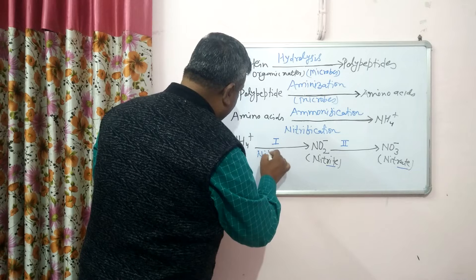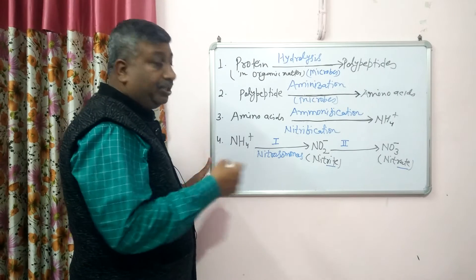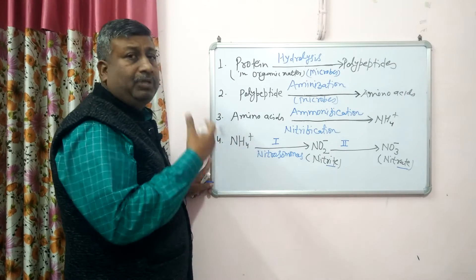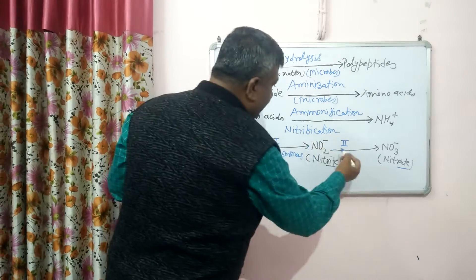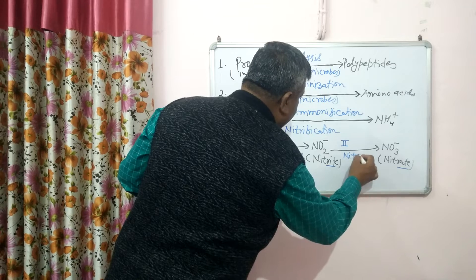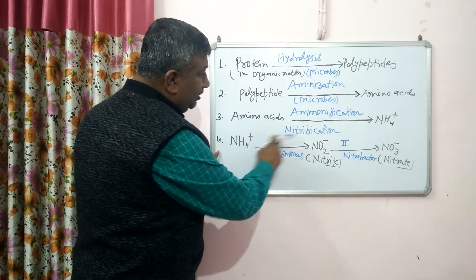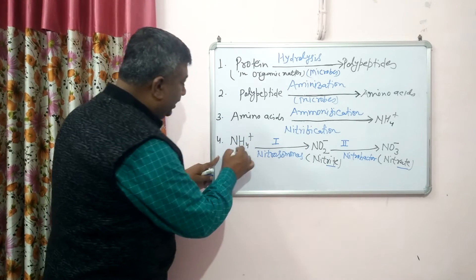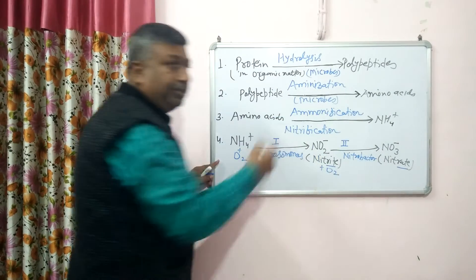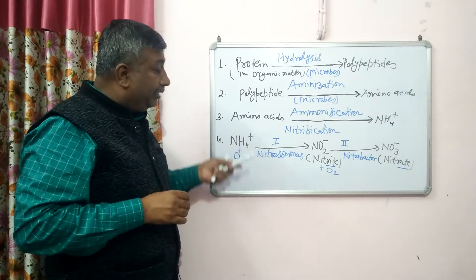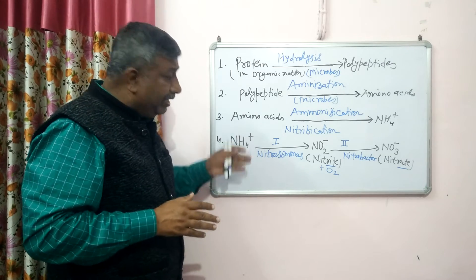In the first step of nitrification, Nitrosomonas bacteria is dominant — other bacteria are also present but Nitrosomonas is the major one, important for examinations. In the second step, Nitrobacter is involved. This process is oxidation — NH₄⁺ is oxidized using O₂, so oxygen is involved. Nitrification is therefore a biological oxidation process, and bacteria presence is essential.